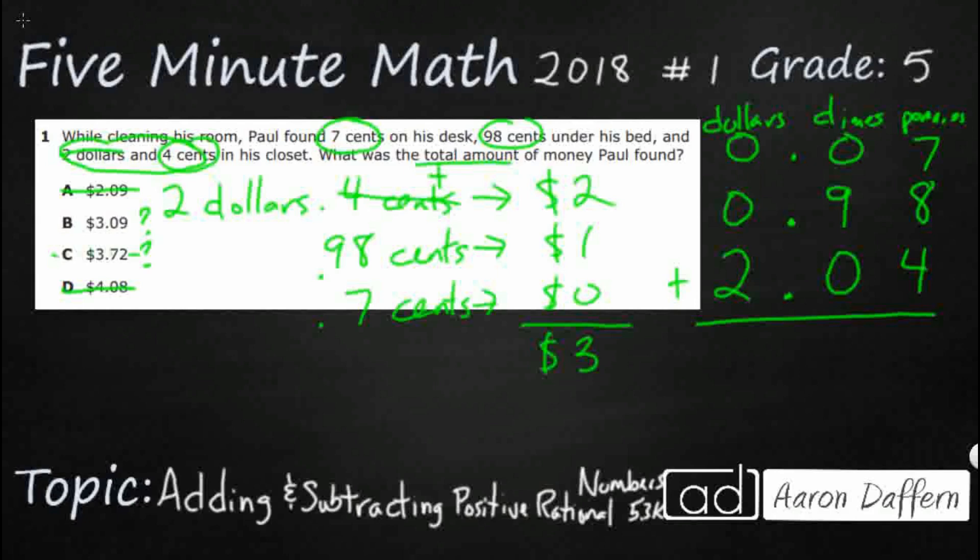But once we have this, it's pretty simple. Line up the decimals. Bring the decimal down into our sum. Add straight down. So 7 and 8 is 15. Add the 4 is 19. We are going to see 1 and 0 is 1. Add that 9 is 10. And then we've just got 1 and 2. And there is our 3. So just like we thought, the answer is going to be B, $3.09.